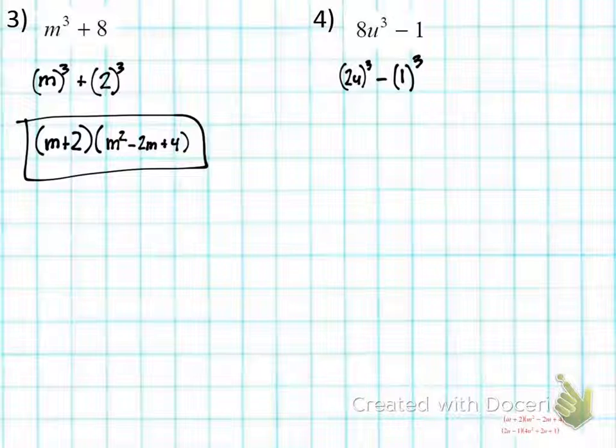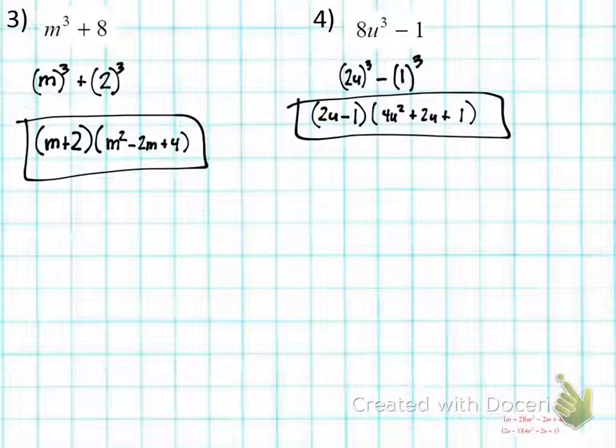So continuing on here, you should have 2U minus 1 as the first term, our first expression, times open parentheses. Get 4U². And look, we're going to have a plus sign here. Plus. That's your answer. Make sense? Yep. I hope so. Good?